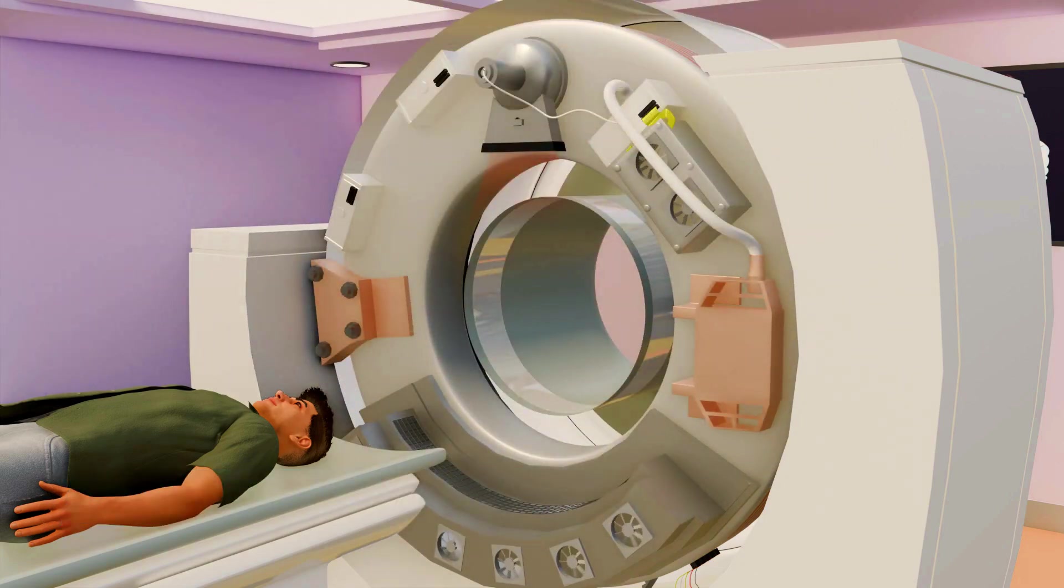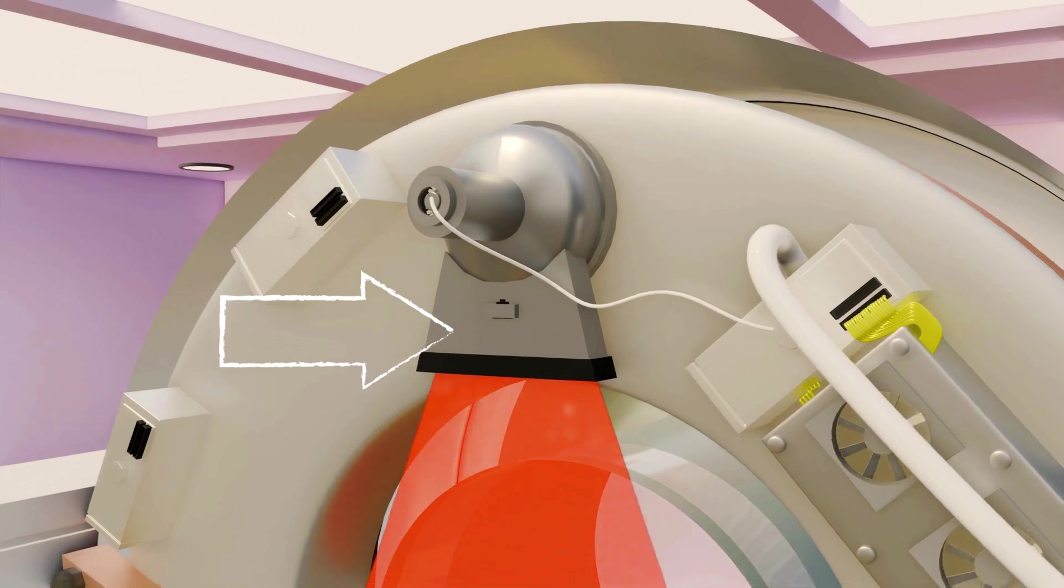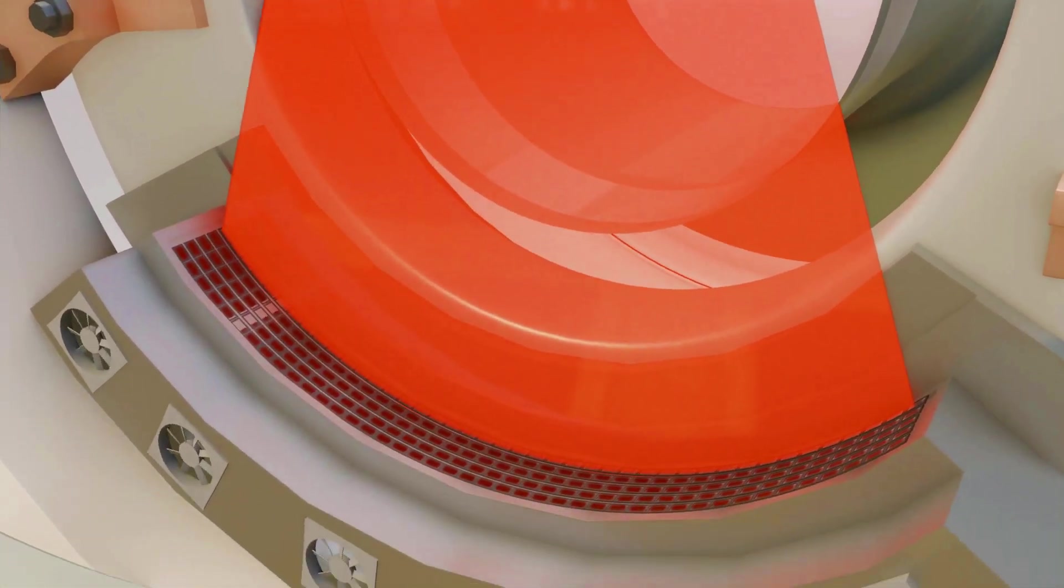Inside the machine, there is an X-ray emitter on one side that generates and emits X-rays, while on the opposite side a detector receives these rays.